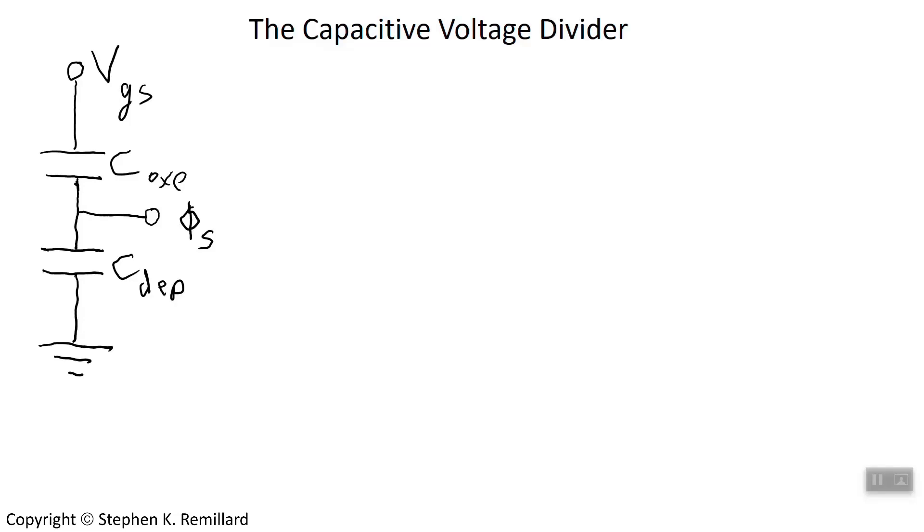A problem that we're going to come across as we start chapter 7, when we want to understand the subthreshold current, is this elementary problem of the capacitive voltage divider.